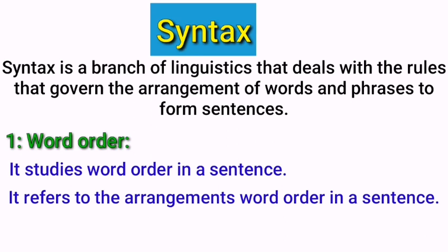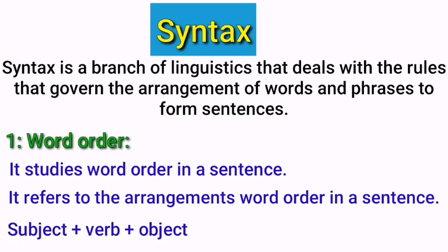Word order is a fundamental element of grammar that helps to distinguish between different types of sentences and express specific ideas. In English, the typical word order is subject, verb, object, meaning that the subject, which performs the action, comes first, followed by the verb, which expresses the action, and then the object, which receives the action. This order is often used for declarative sentences. Simply, we study how words are used to form different sentences.